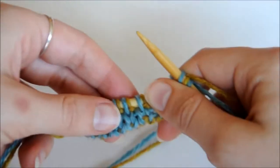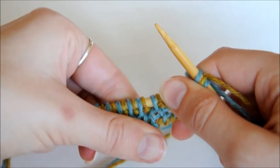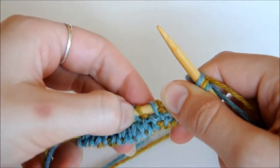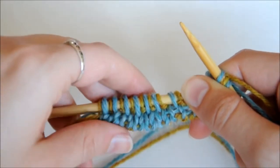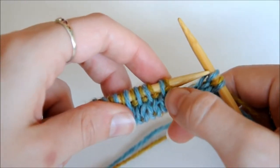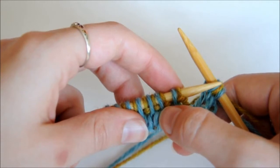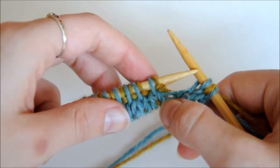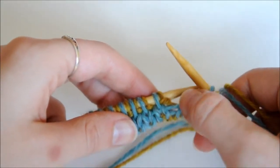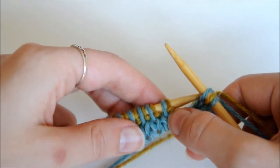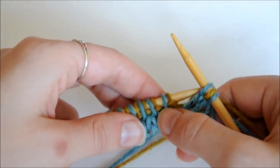You're always going to work the blues and blues, and you're always going to work the yellows and yellows, and you can just read your knitting to see what you should be doing. You can see this yellow purl ridge here in between all the blue stitches, and the blue stitches are nice and straight. So we know to purl the yellow because we've got the ridge, and knit the blues.